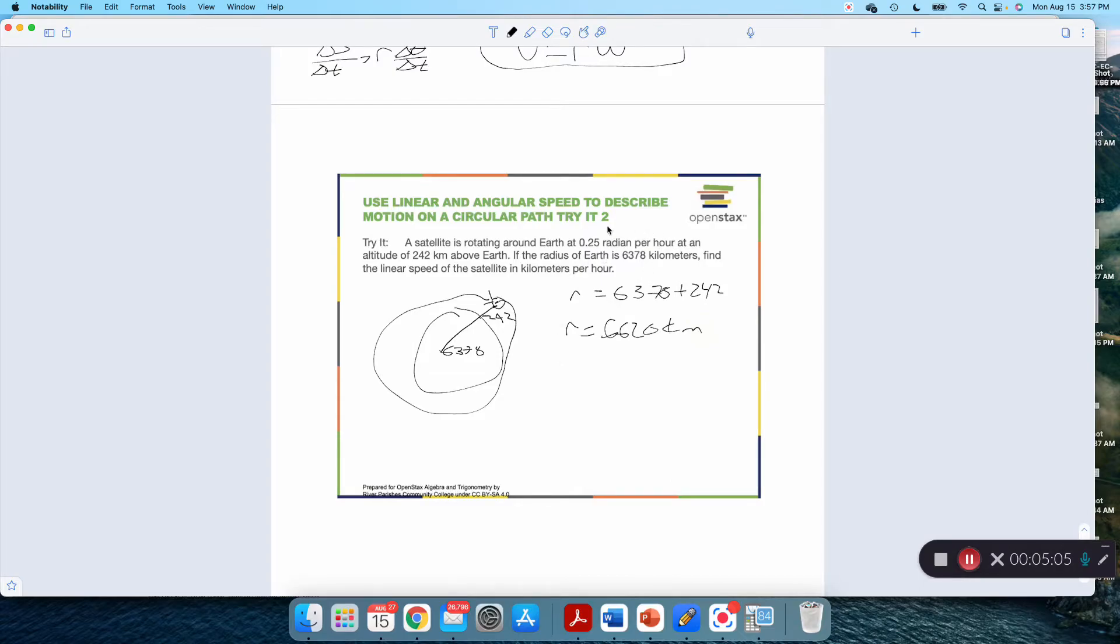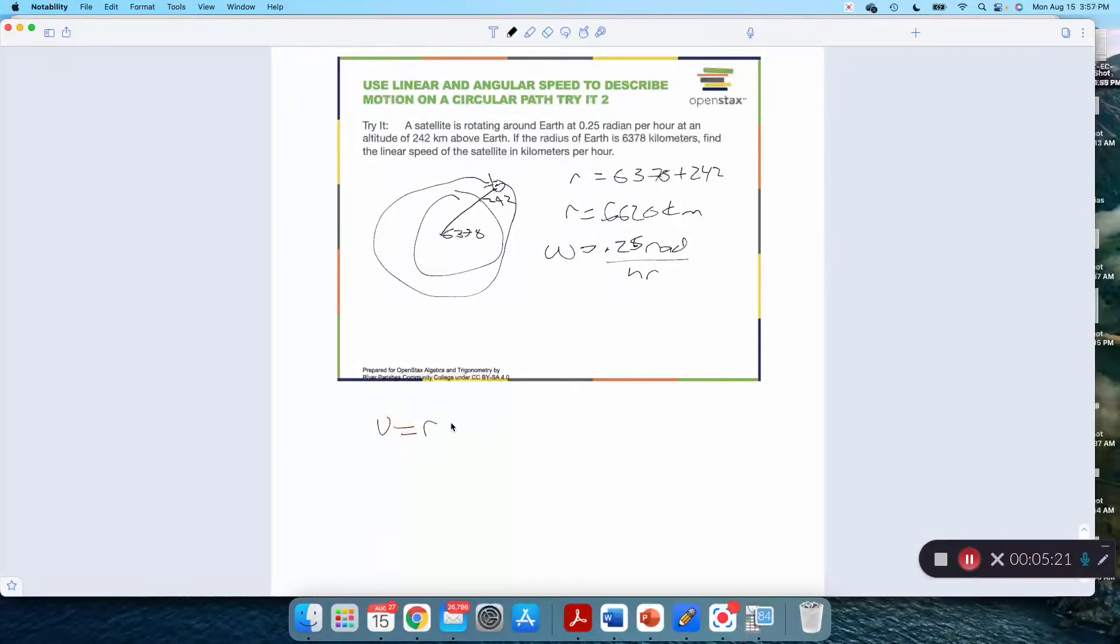I know that my angular speed omega is 0.25 radians per hour. I want to figure out the linear speed. Well that's not too bad because V equals R omega as long as I'm using radians per something. V equals R omega. We can even look at our units here. R is measured in kilometers, 6620 kilometers. Omega is measured in radians per second, so times 0.25 radians per hour. This is over 1. Radians are unitless. I can ignore, I didn't even have to write radians there. Radians have no units. My units here are going to be kilometers over hours.